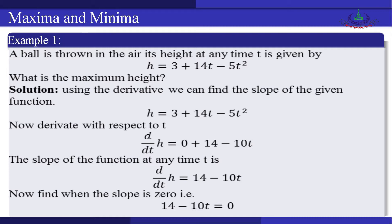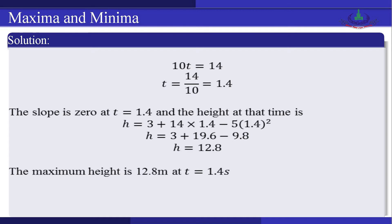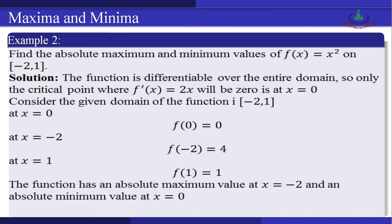Setting the slope equal to zero: 14 − 10t = 0, so 10t = 14, giving t = 1.4. The slope is zero at t = 1.4. Substituting t = 1.4 into the height equation: h(1.4) = 3 + 14(1.4) − 5(1.4)² = 3 + 19.6 − 9.8 = 12.8. Therefore the maximum height is 12.8 meters at time t = 1.4 seconds.